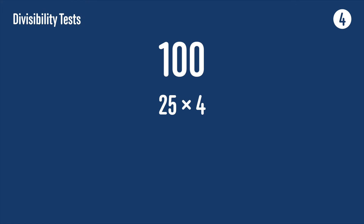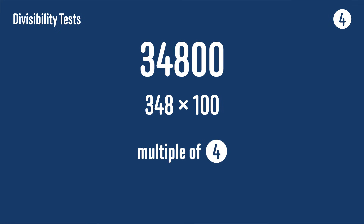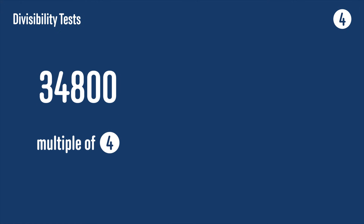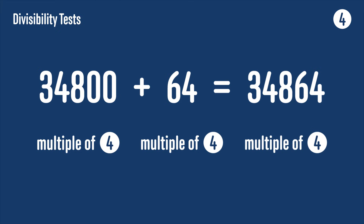To see why that's true, think about the number 100: that's 25 × 4, so it's a multiple of 4. This means any multiple of 100 is a multiple of 4 too. So 34,800 is a multiple of 4 because it equals 348 × 100 = 348 × 25 × 4. If we add a multiple of 4 to this, we still have a multiple of 4. Our example was 34,864 = 34,800 + 64 — both are multiples of 4, so 34,864 is a multiple of 4. That's why the test works.